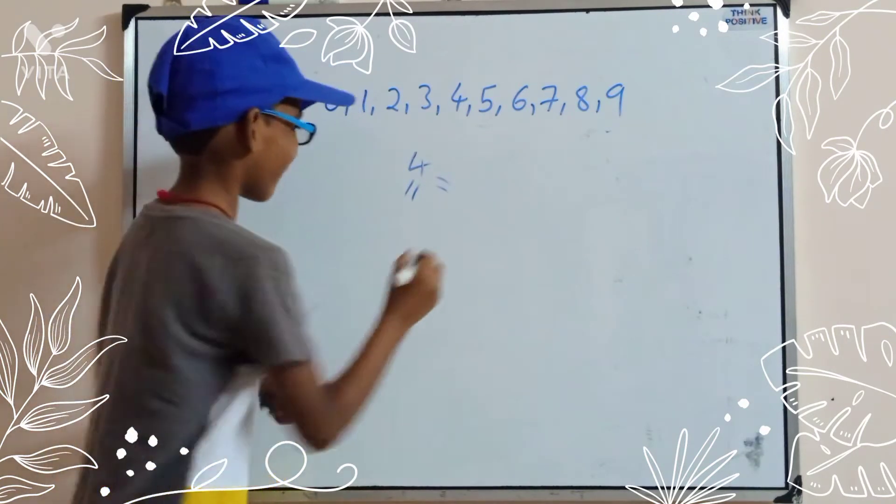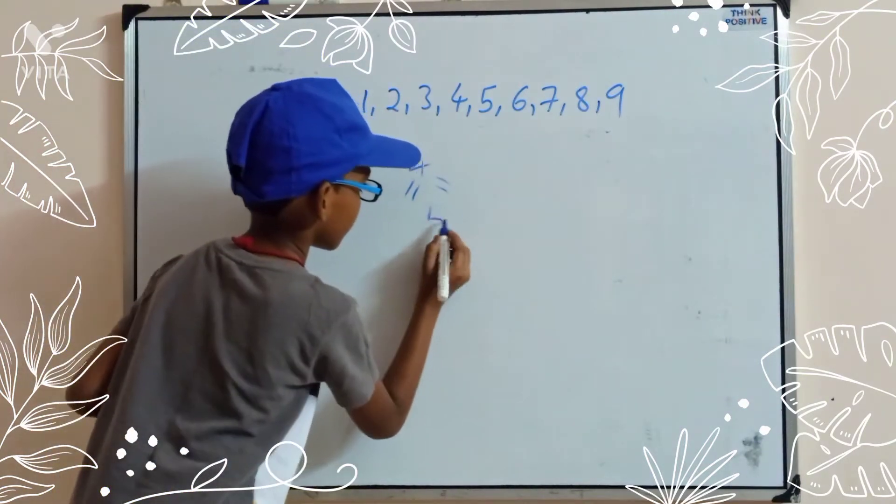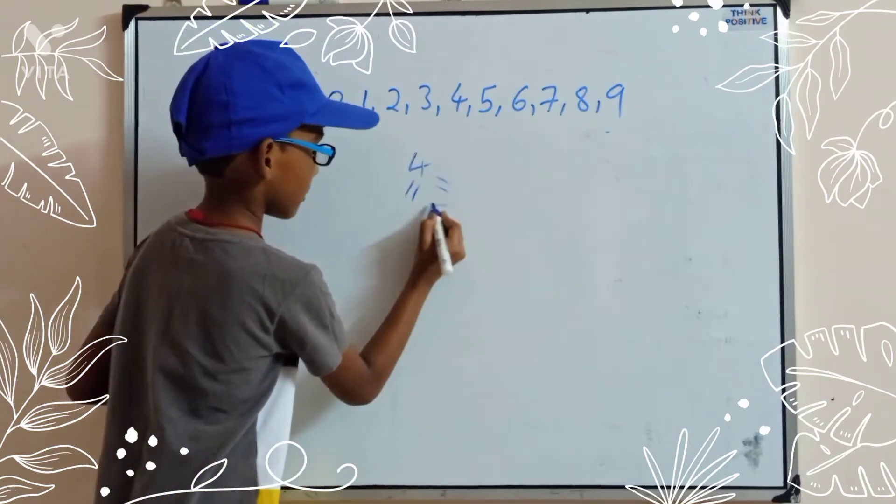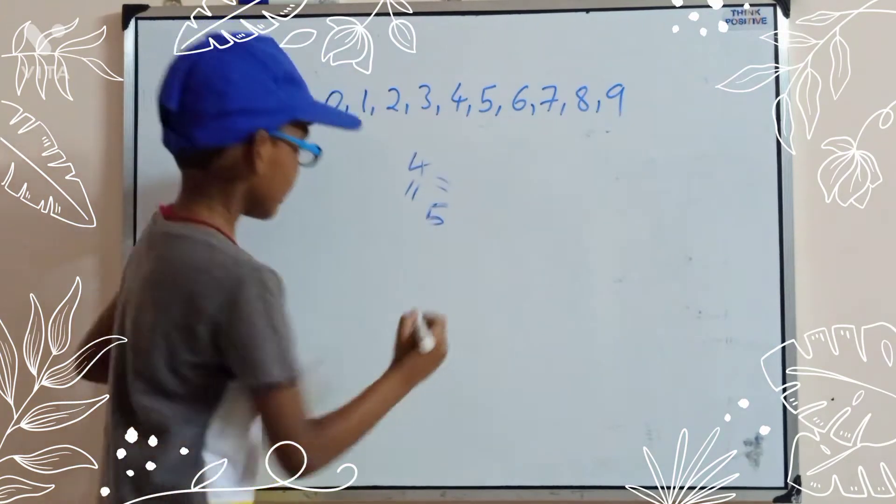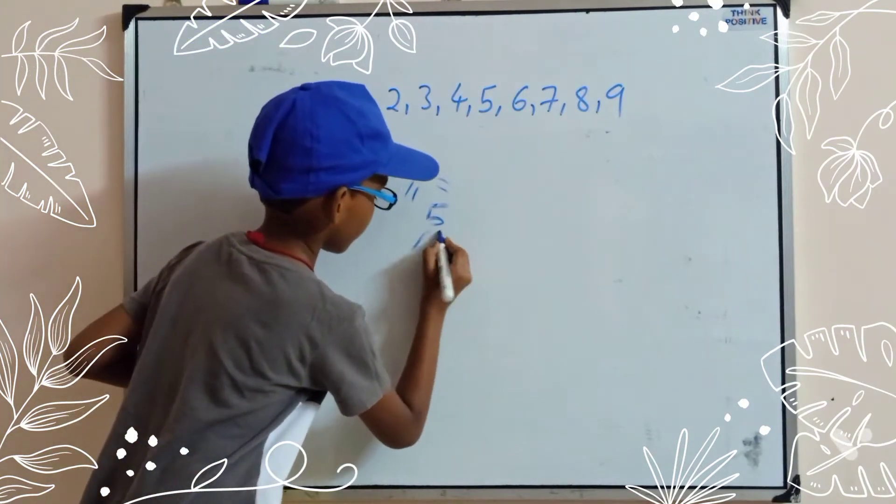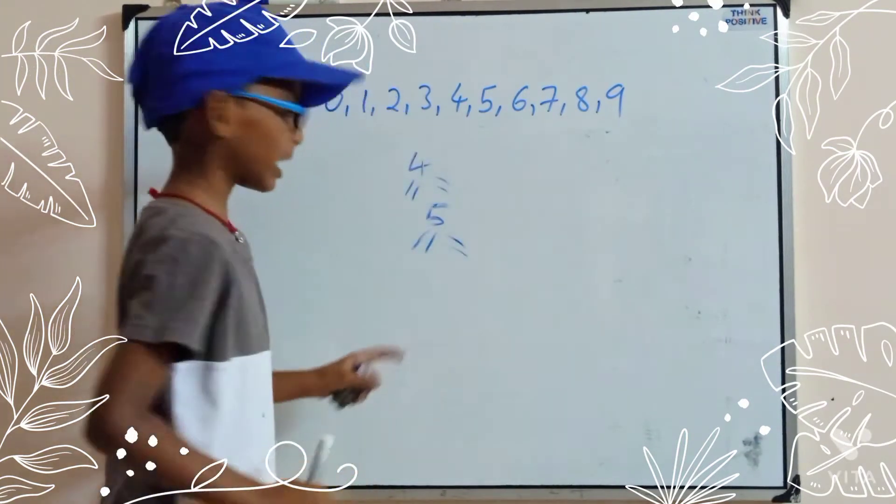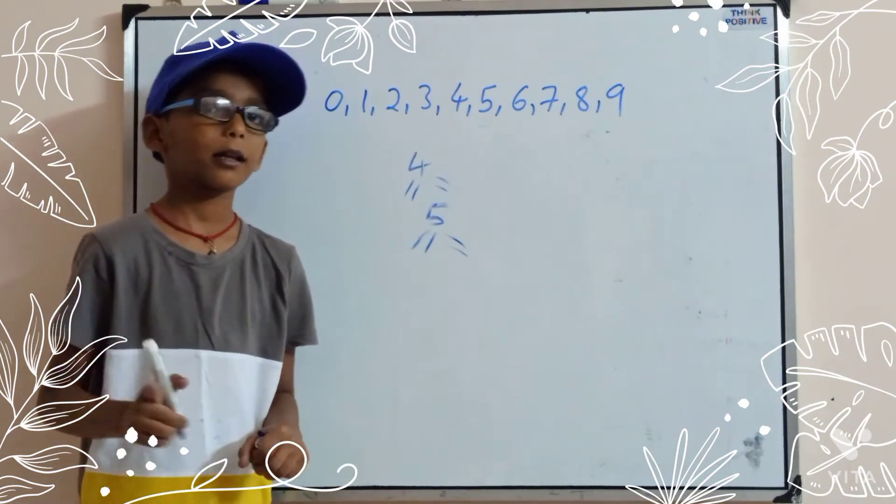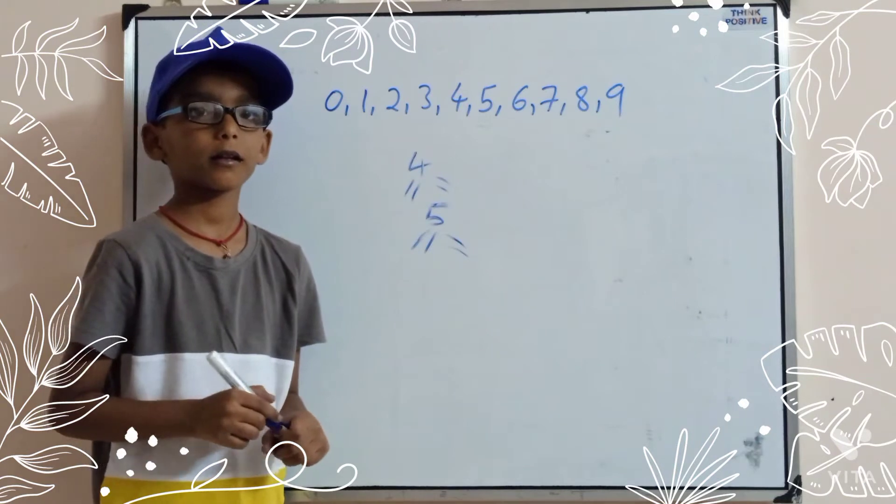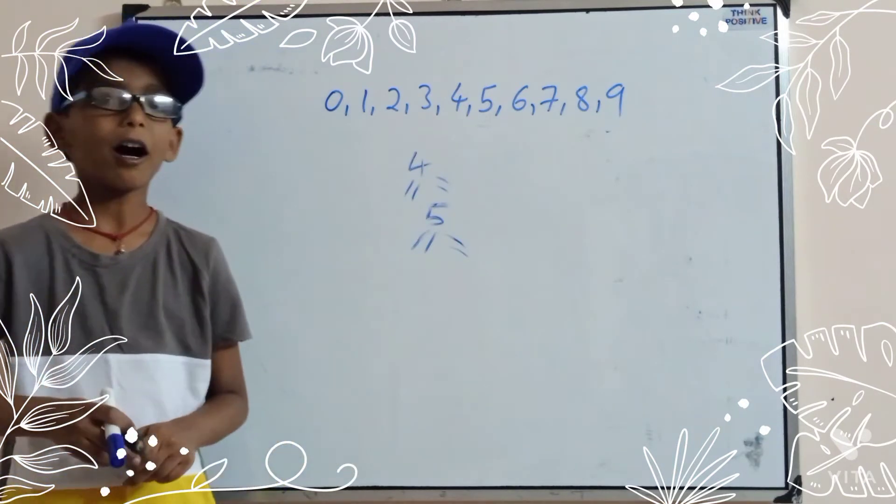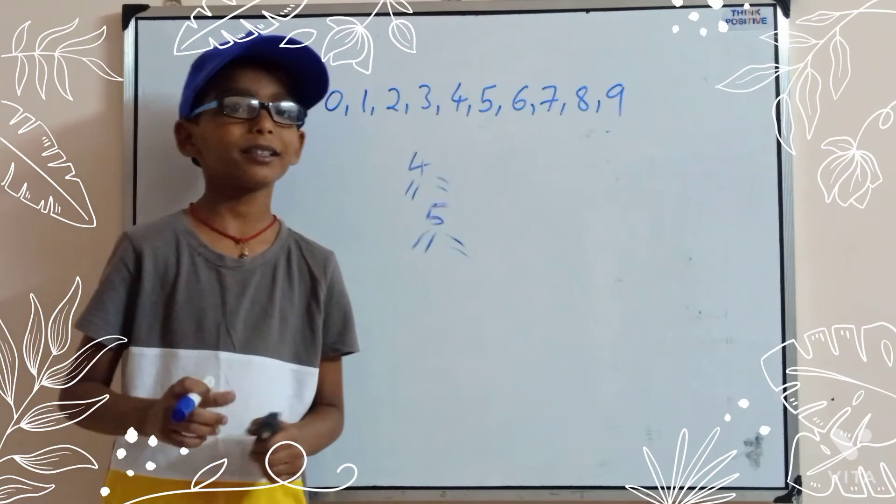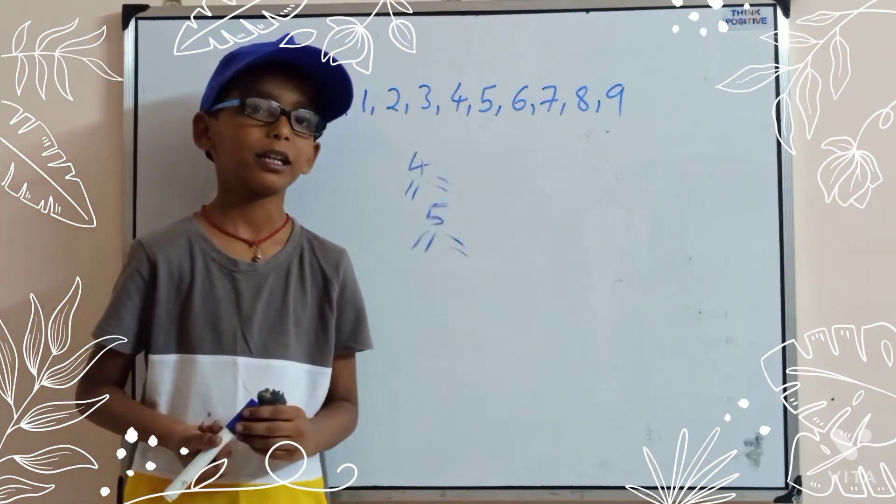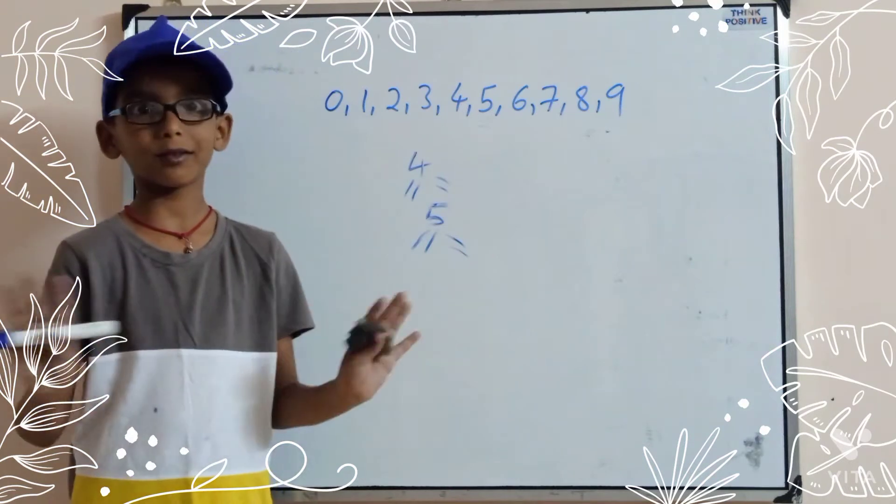Suppose I will take 5. Then 1 is left over. That's why odd number. So, even number means we can share equally. Odd number means we cannot.